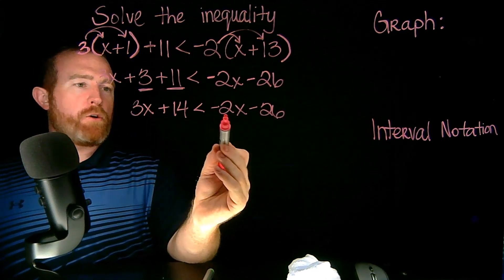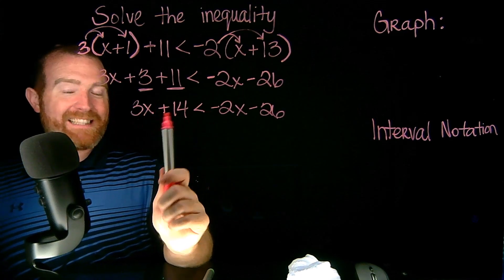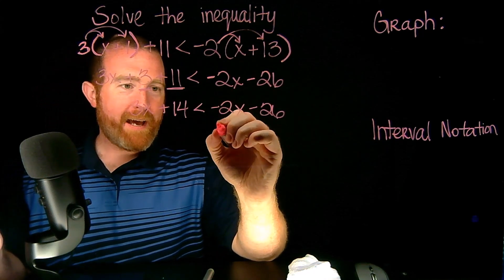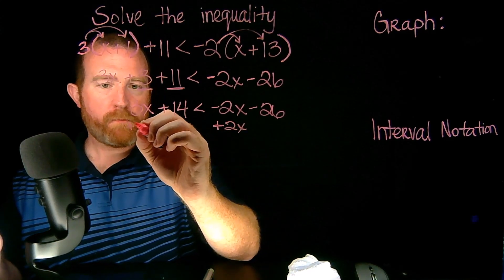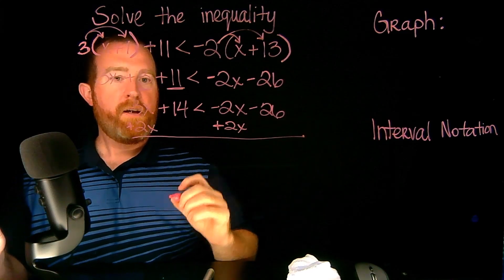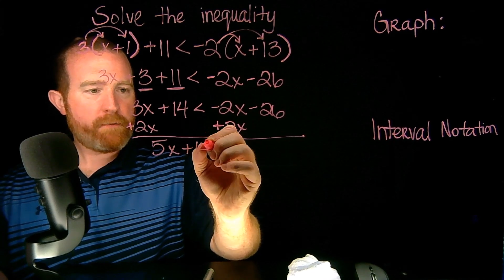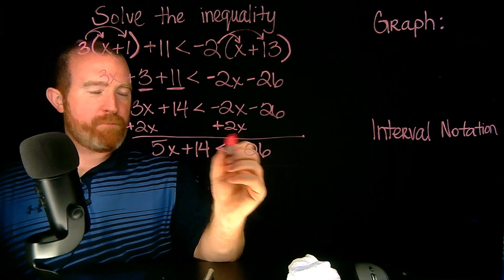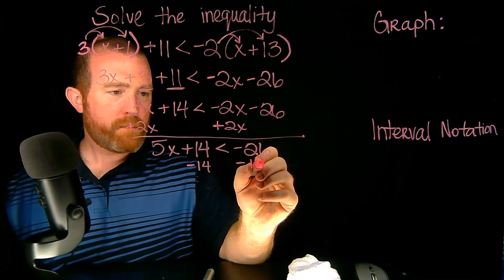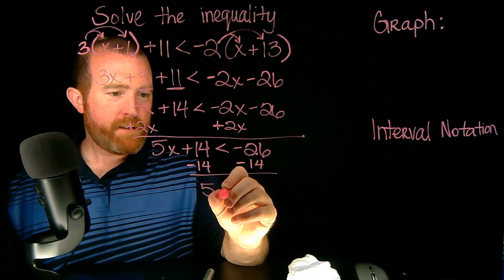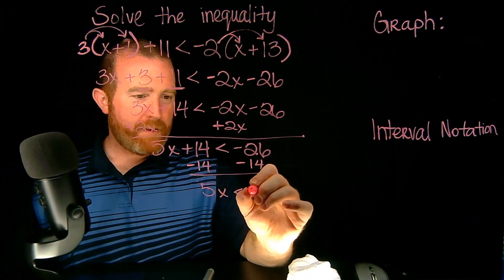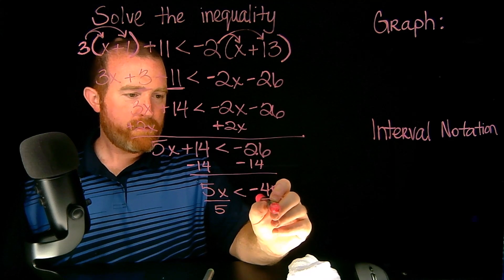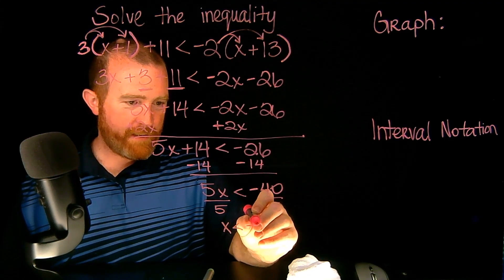Again, when moving X's, always move the smaller one — that makes it easiest. Negative 2 is smaller than positive 3, so I'll do the opposite of what they're doing: since they're subtracting, I'll add 2X. That gives me 5X plus 14 is less than negative 26. Now I subtract 14 from both sides, giving me 5X is less than negative 40. Dividing both sides by 5, I get X is less than negative 8.